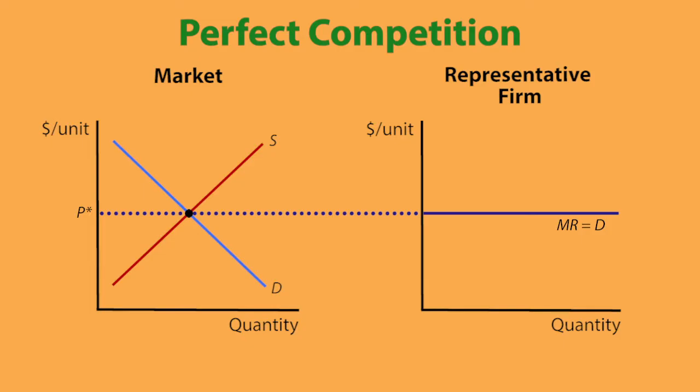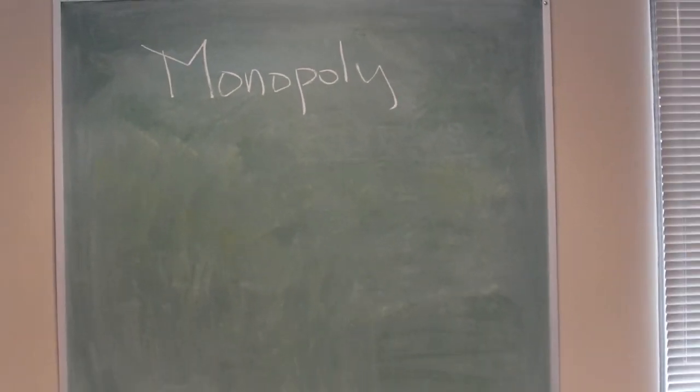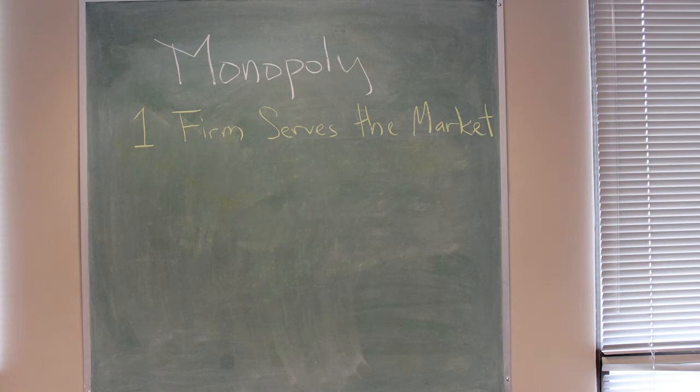The demand curve is also the marginal revenue curve because when they sell another unit, they get the price represented by the height of that line. A monopoly is different because a monopoly faces the entire market demand curve because the monopoly is the only firm in the market.